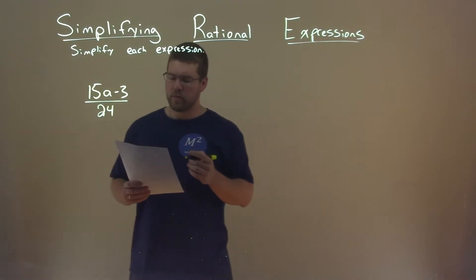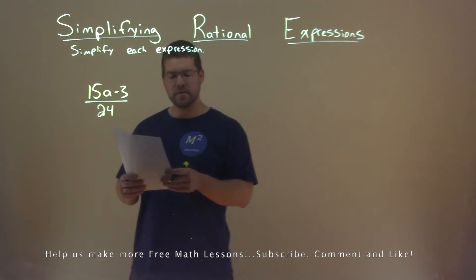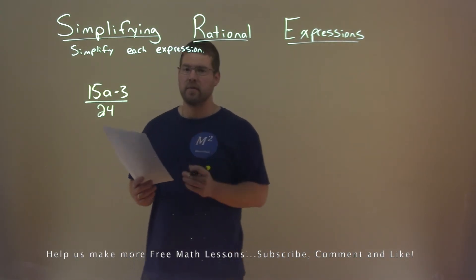We're given this problem right here: 15a minus 3 over 24, and we want to simplify this expression.